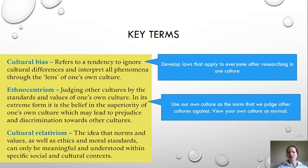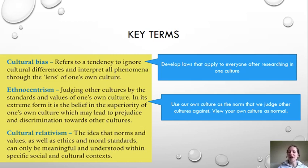Ethnocentrism is closely related to cultural bias. This is where you view your own culture as normal and use your culture to judge other cultures. Other cultures don't necessarily become seen as abnormal, but your values are still centred around your own culture, which you view as normal.